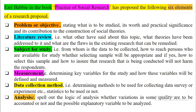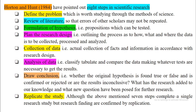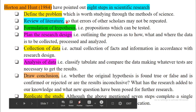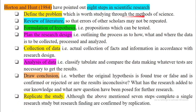Horton and Hunt (1984) pointed out eight steps in social scientific research. First, define the problem — what is to be studied through scientific methods, and why the study is important. Second, review of literature — so that errors made by other researchers are not repeated by yourself.